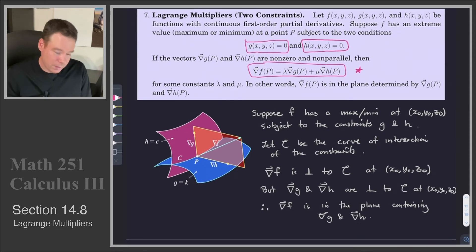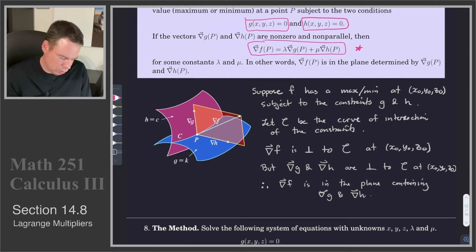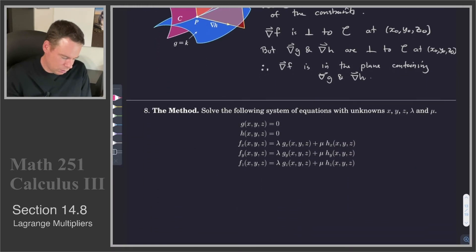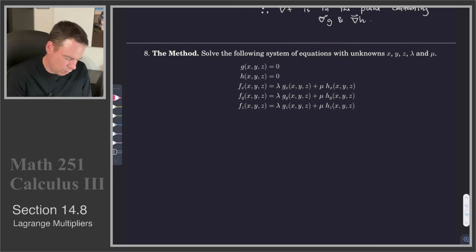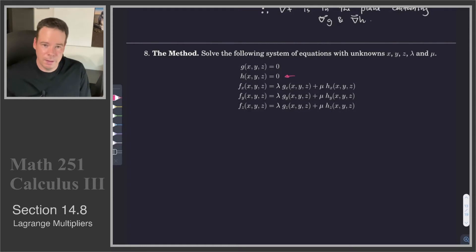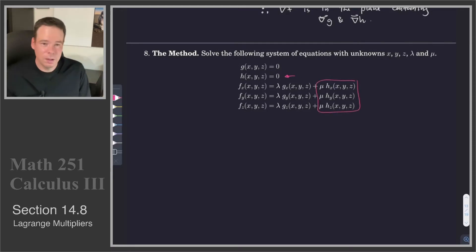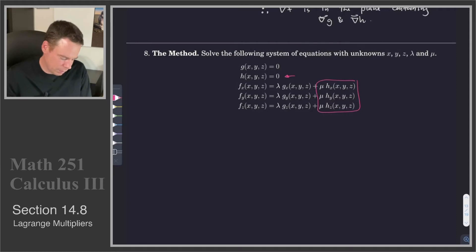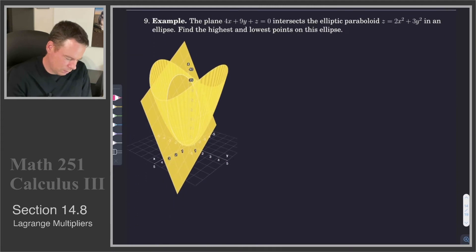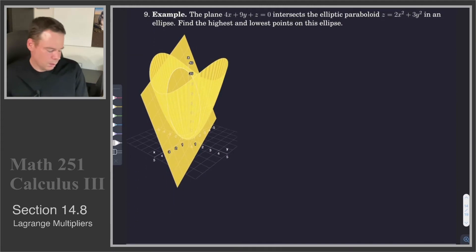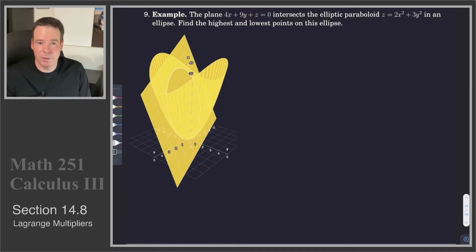That's our statement of Lagrange multipliers for two constraints. Here's how we put it into practice. When we're using this method, compared to the single constraint case, there's a second constraint and our gradient equations have an extra term involving a second scalar multiplier, which is mu in this case. Let's see how we can do this for a particular example. Here we've got a plane intersecting an elliptic paraboloid, and we want to find the highest and lowest points on their curve of intersection, which is an ellipse.